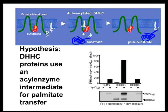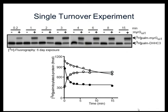To test this directly, my student Ben Jennings did a single turnover experiment, where he purified radiolabeled DHHC3 labeled with tritiated palmitate and removed all free palmitoyl-CoA. When he then incubated that with myristoylated Gα-i1, he could see a time-dependent transfer of the radiolabel from the enzyme onto the substrate, and the rate of appearance of palmitate on the substrate paralleled the rate of loss of palmitate from the enzyme. This was direct evidence that the enzyme forms an acyl-enzyme intermediate, and that it is the palmitate on the enzyme that is transferred to the substrate.